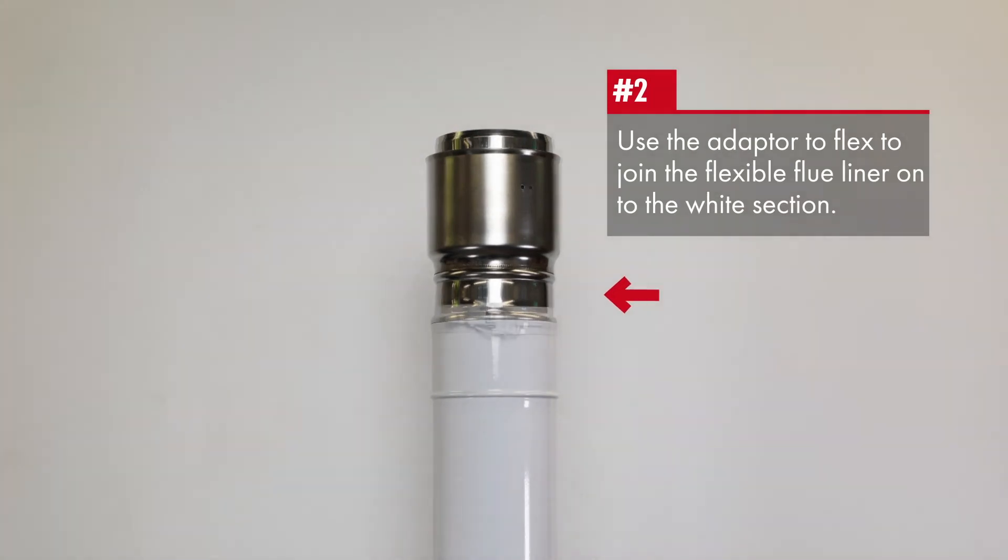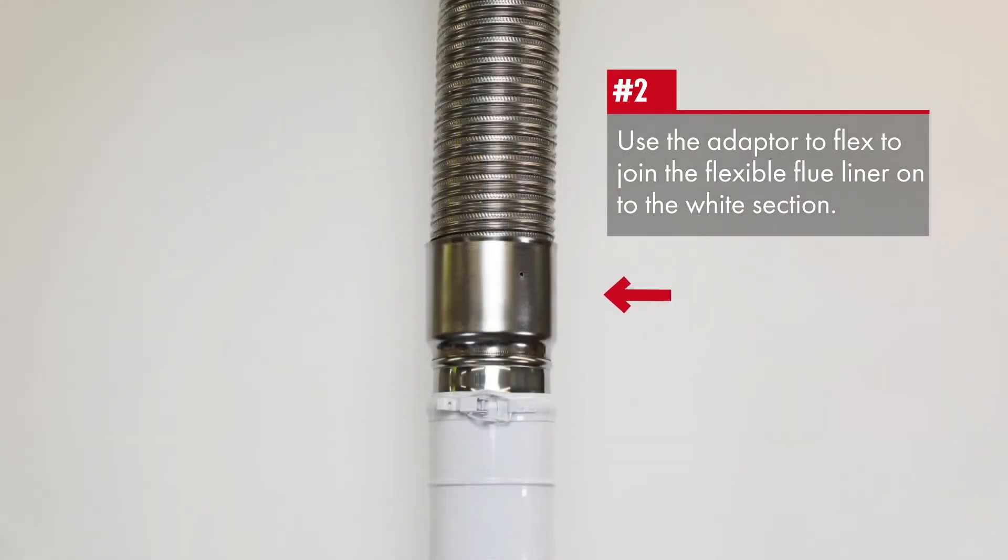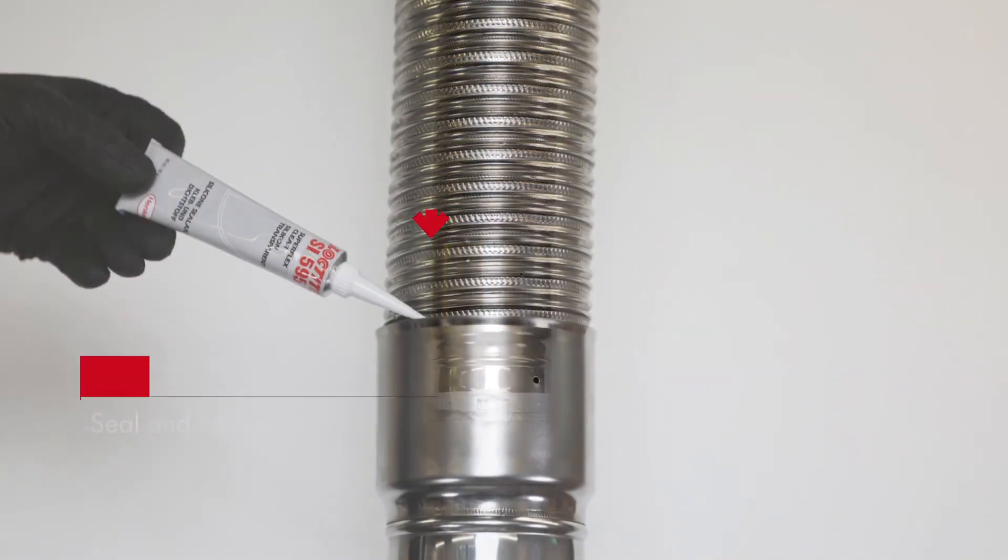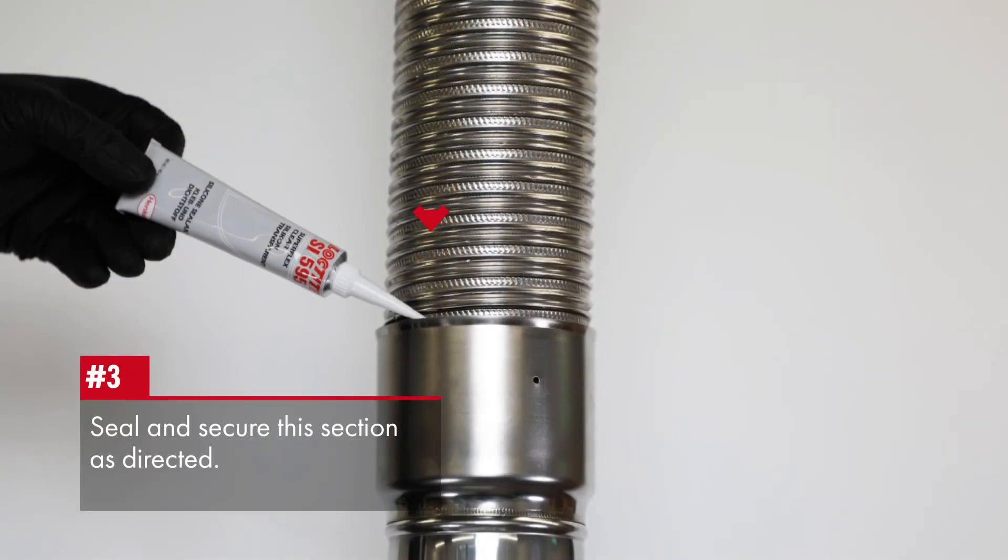The adapter to flex is used to join the flexible liner onto the white sections. This connection should be sealed and secured as directed.